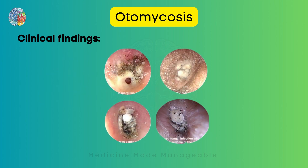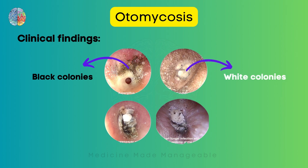Here are pictures of the EAC. In the first picture, black colonies are visible, indicating an Aspergillus niger infection. The second picture shows white colonies, consistent with Candida albicans. The third picture shows a mixture of black and white colonies, representing a mixed infection.